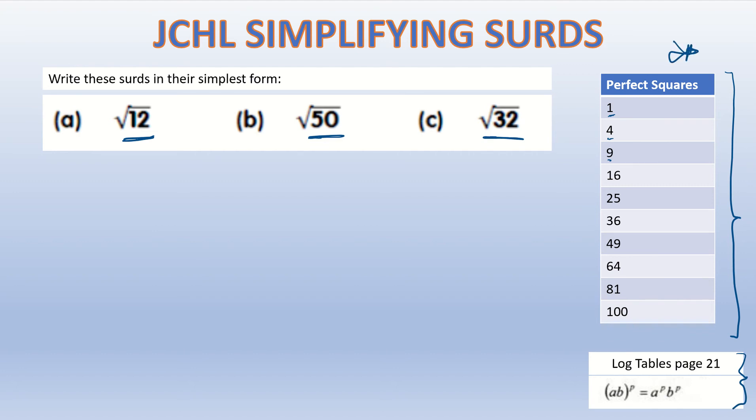For root 12, the first thing we're going to do is keep our square root and try to break up the 12 into two numbers being multiplied by each other. But our only catch is that our first number has to be the biggest perfect square that we can find. So my list of perfect squares is going to come in handy now.